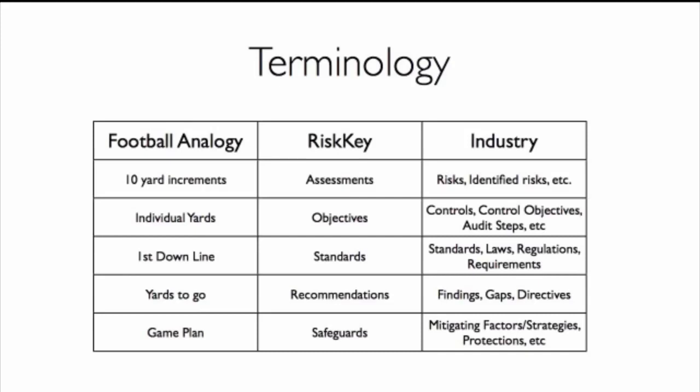To summarize the analogy: you have a bird's-eye view that moves to a more granular individual yard-line level. The first-down line is whatever marker you're trying to meet; yards to go are your recommendations; and your overall game plan is whatever strategies you have in place to protect from risk. If there are questions, hold on to them — they'll open it up for clarifying questions in just a couple of minutes.